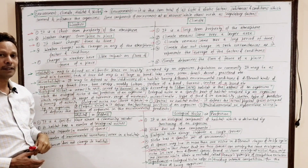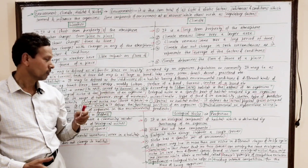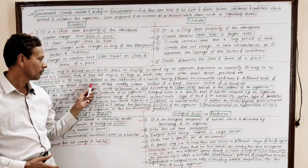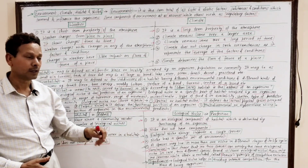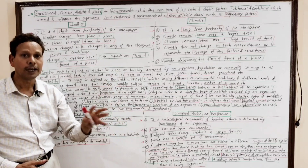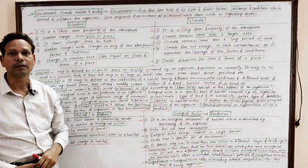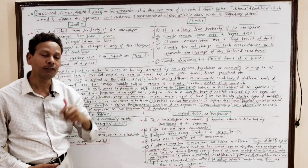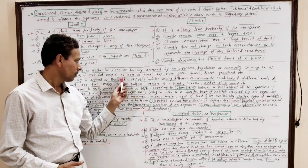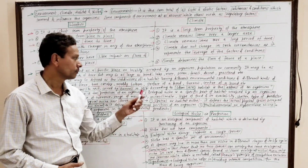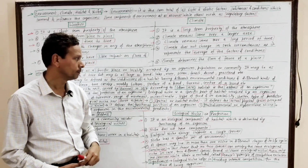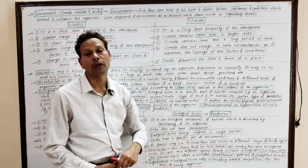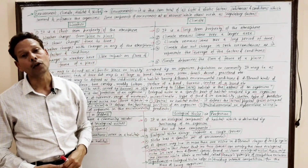Examples of microhabitats include: forest floor, tree canopy, below a tree, the muddy bottom, surface of a pond, burrow, and center of pond. In each of these, the conditions are different and the organisms are different.